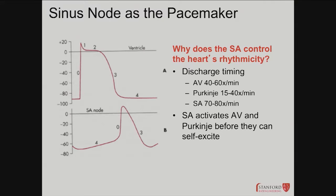Regarding pacemaker hierarchy: slow response fibers are present in the SA node, AV node, and some Purkinje fibers also have automaticity. The reason the SA node drives the AV node — and not the other way around — is that the SA node's intrinsic basal firing rate is higher, between 70 and 100 bpm, so it supersedes. In diseased states where the SA node is damaged, the AV node can take over, producing junctional rhythms, which are pathological and require treatment.